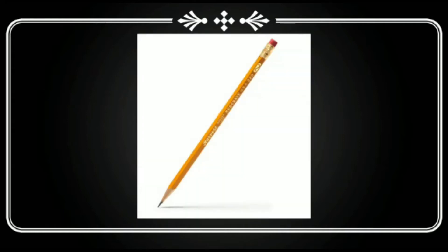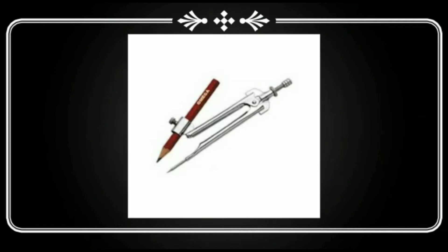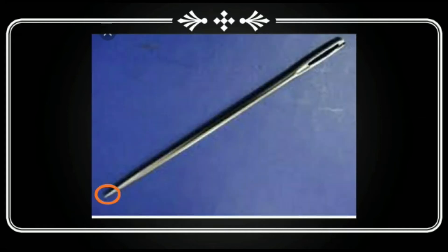The first term related to geometry is the point. When we touch our pen or pencil tip to the paper, a point is formed. Some examples of point are sharp tip of compass and point of a needle.